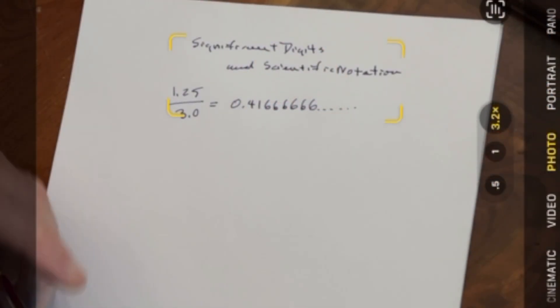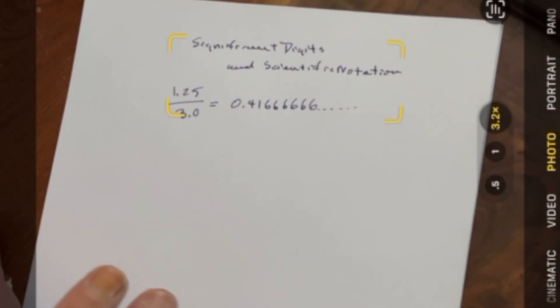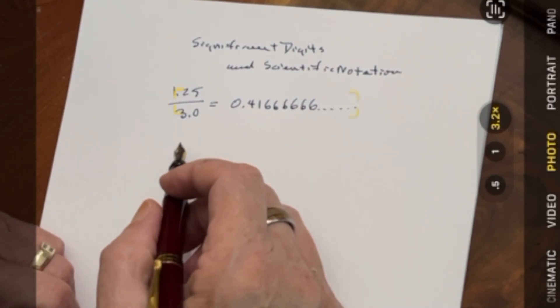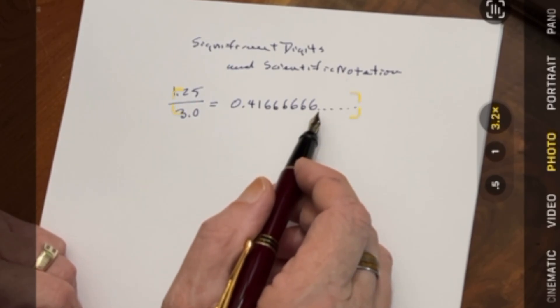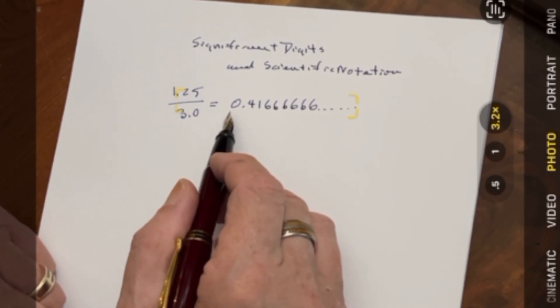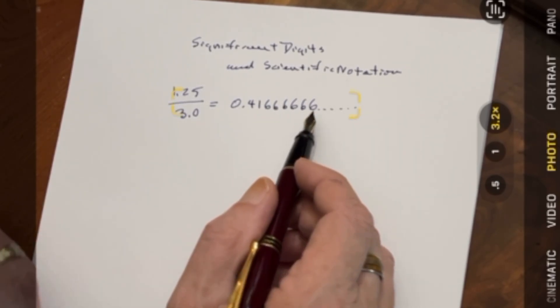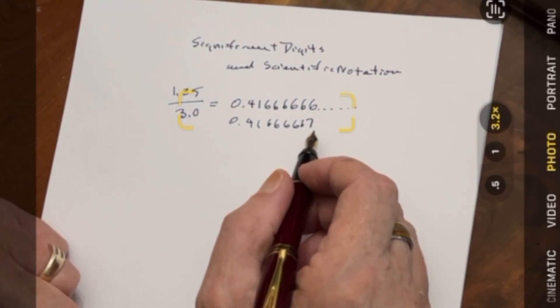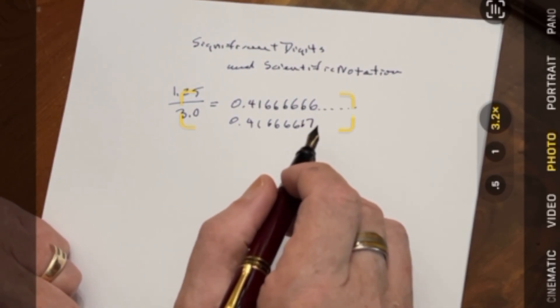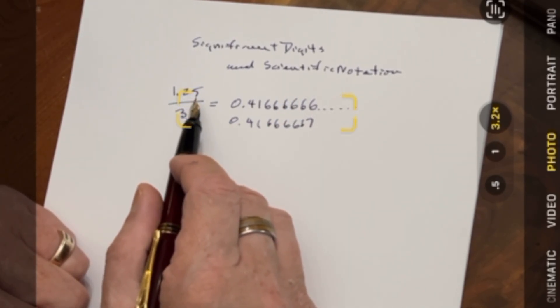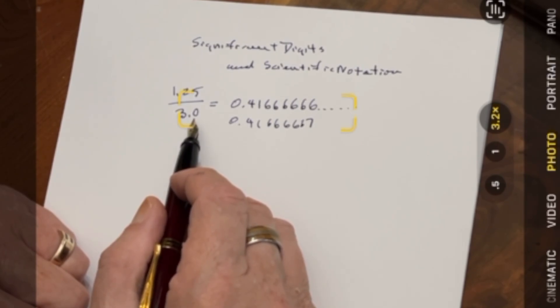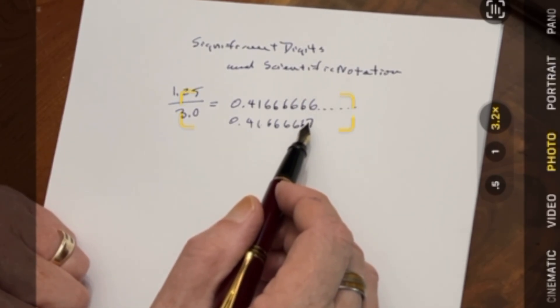Let's dive right in with Chapter 1, starting with significant digits and scientific notation. When we do basic math we can get a ridiculous number of decimal places. For example, if you divide 1.25 by 3.0 we get this answer here. The question becomes: how many of these decimal places are actually meaningful? We do our math and come up with an answer, but we have to look at the number of significant digits in what we put in to determine how many we can trust on the way out.